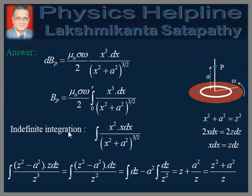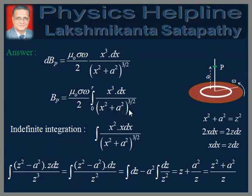Therefore the magnetic field produced at point P by the entire charged disc is obtained by integrating dBp. So Bp = μ₀ sigma ω / 2 × integral from 0 to R of x³ dx / (x² + a²)^(3/2).